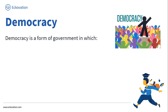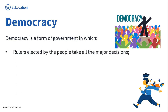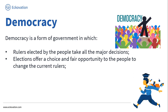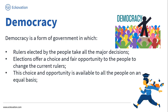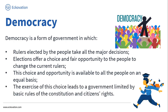After looking at all the features of democracy, let us define democracy in a complete sense. Democracy is a form of government in which rulers elected by the people take all the major decisions. Elections offer a choice and fair opportunity to the people to change the current rulers. This choice and opportunity is available to all people on an equal basis. The exercise of this choice leads to a government limited by the basic rules of the constitution and citizens' rights.